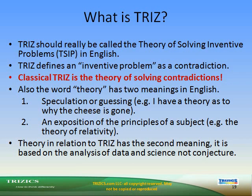TRIZ uses proven knowledge obtained by studying large numbers of patents applied throughout mankind's history, created from the study of best practices of successful inventors and problem solvers across many fields of human innovation. TRIZ defines an inventive problem as a contradiction — classical TRIZ is the theory of solving contradictions. The word 'theory' here has its second English meaning: an exposition of the principles of a subject, as in the theory of relativity — based on analysis of data and science, not conjecture.